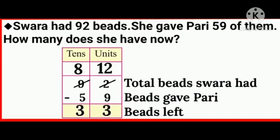Hence, we borrow one ten and make 10 units of it. Thus, we get 12 units. Let's reduce 9 from 12 units. Here, 3 units will be left. 8 tens minus 5 tens equals 3 tens. So the answer is 33. So Swara has now 33 beads.